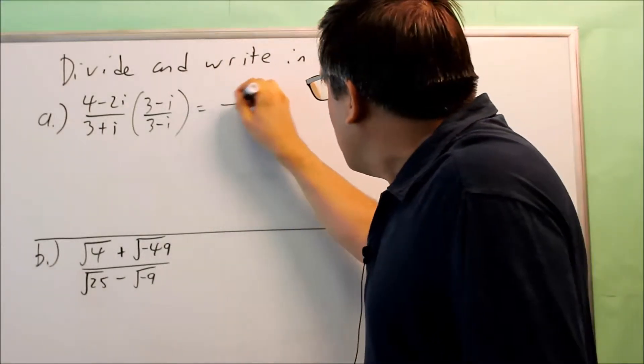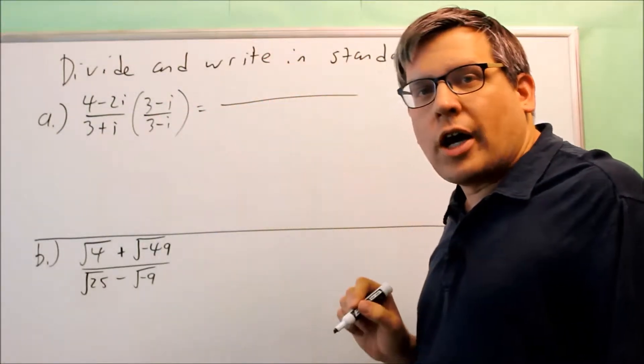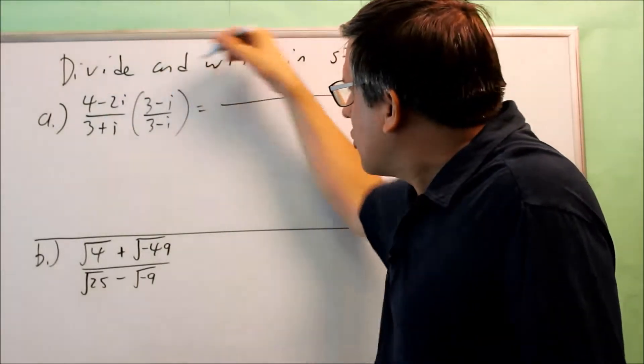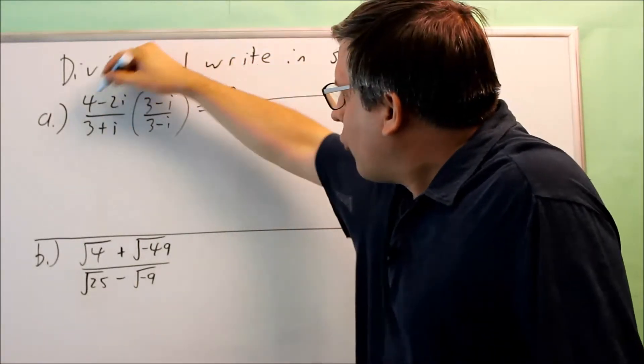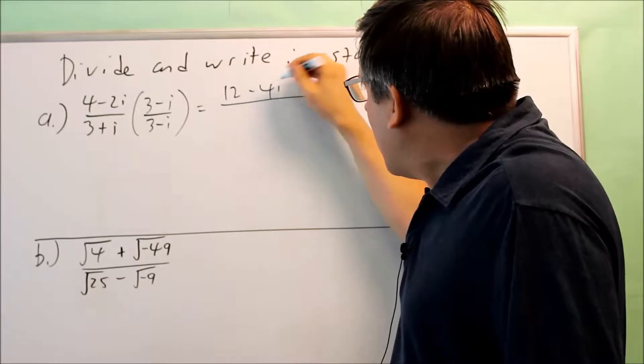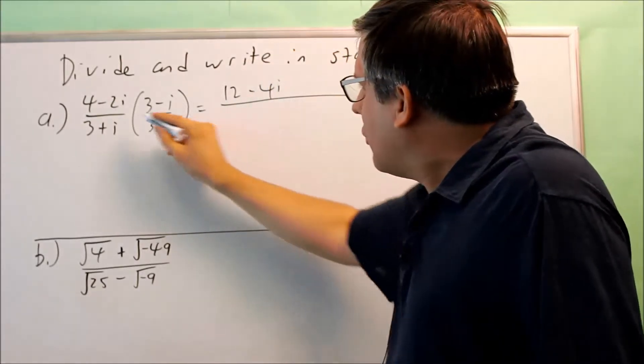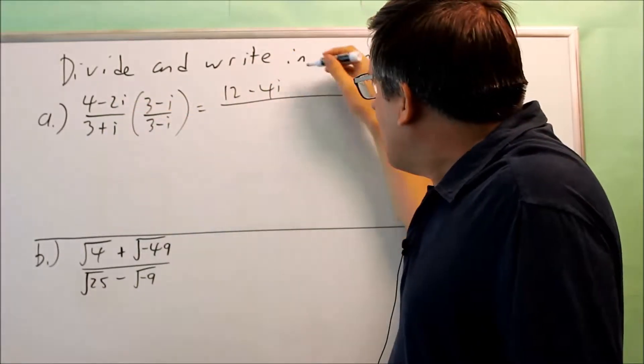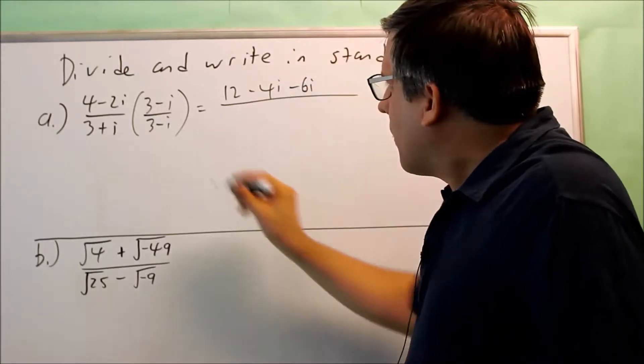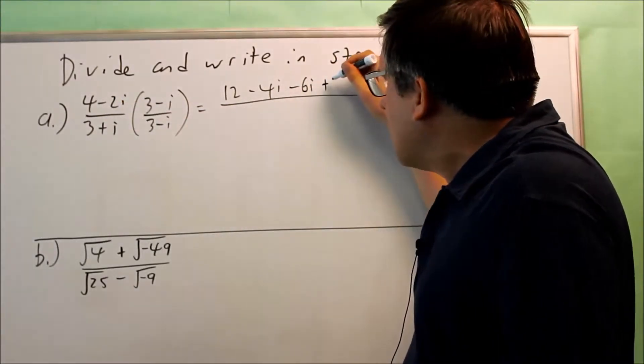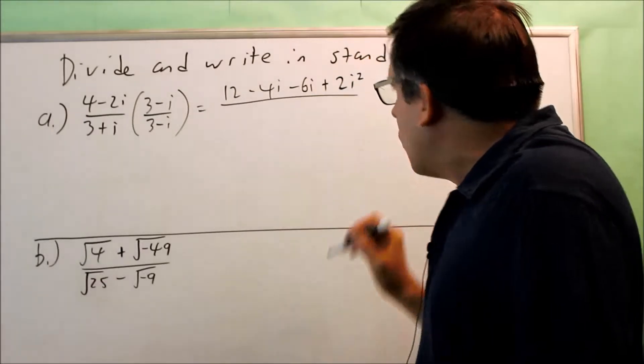So to do this, we're going to multiply across the top, we'll multiply across the bottom. 4 times 3, 12. 4 times negative i, negative 4i. And then we have the middle ones. That's going to be negative 6i. Negative 2 and negative i is going to be plus 2i squared.